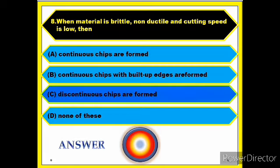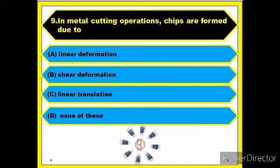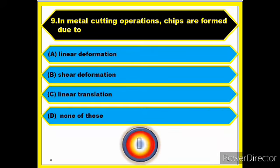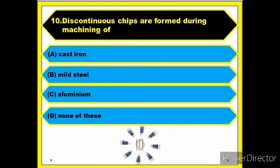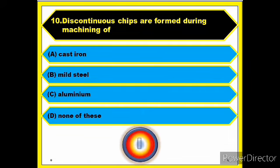Question number nine: in metal cutting operations, chips are formed due to? Answer: shear deformation. Question number ten: discontinuous chips are formed during machining of? Answer: cast iron.